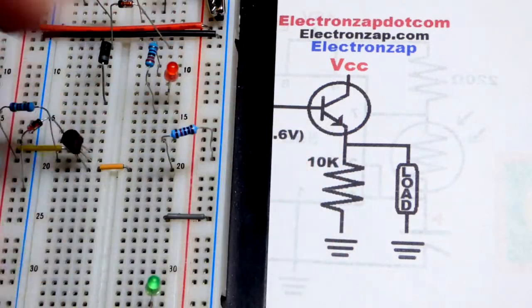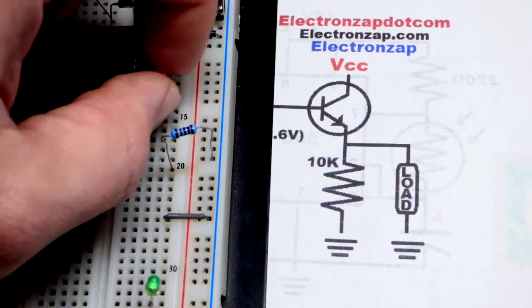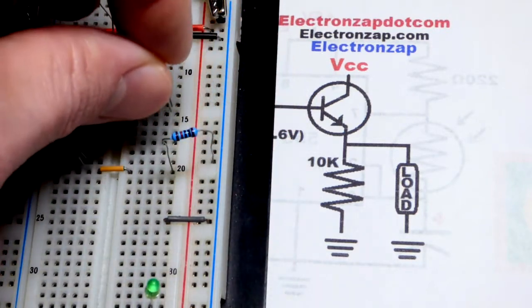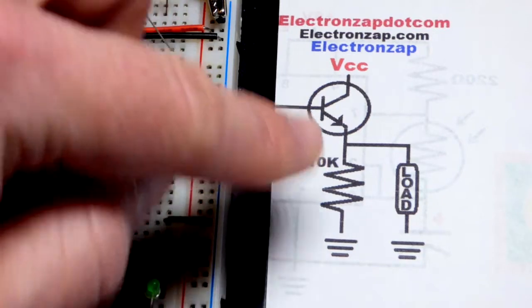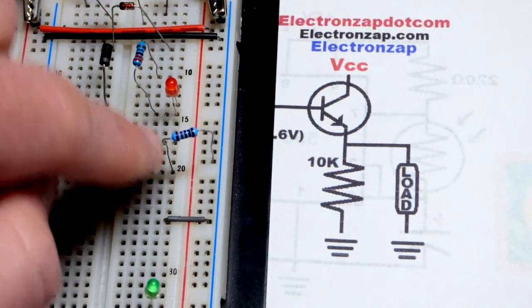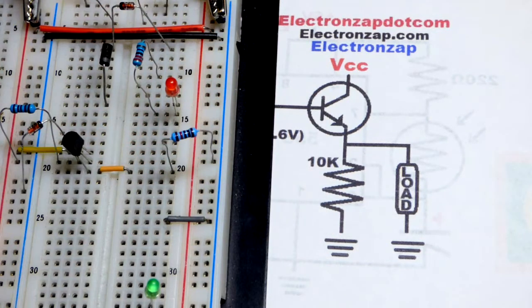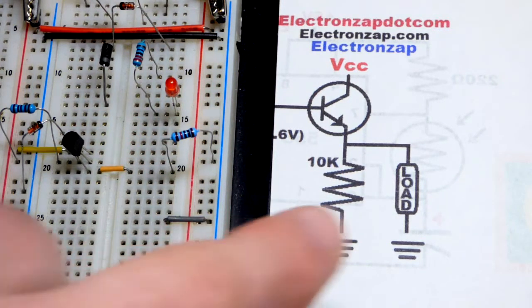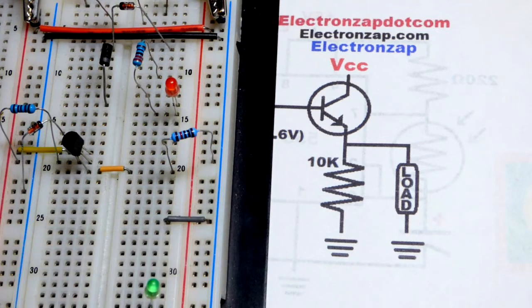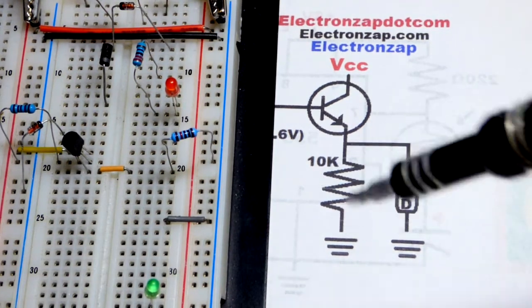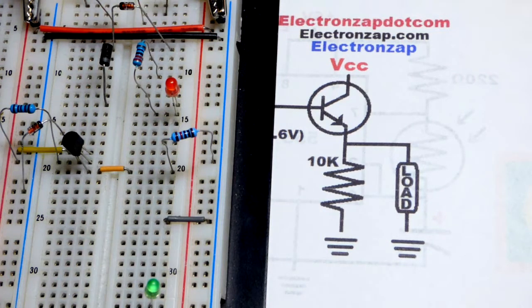And what that does is, especially when you have like LEDs and stuff that drop a certain voltage, it kind of messes up the circuit a little bit at times. This keeps a resistance across there and helps it regulate the voltage a little better. So you may get away without using it, may work exactly the same, and the circuit may not work right without it. So it's a good idea to just always add it.